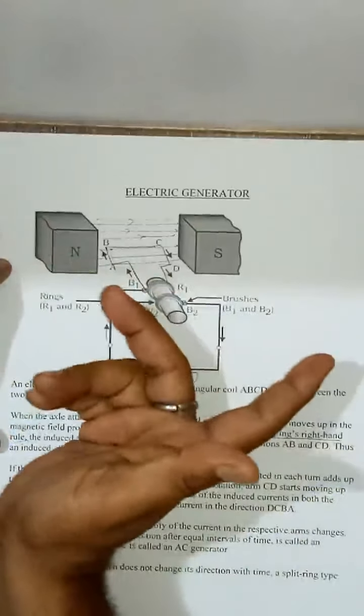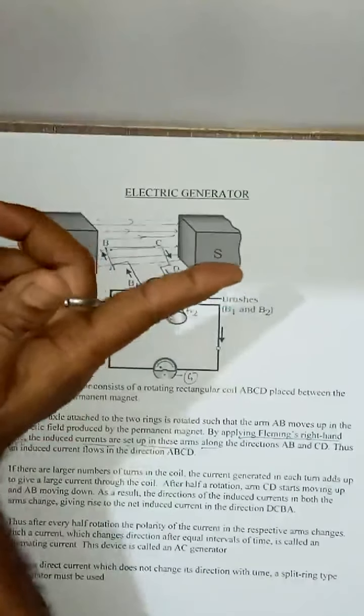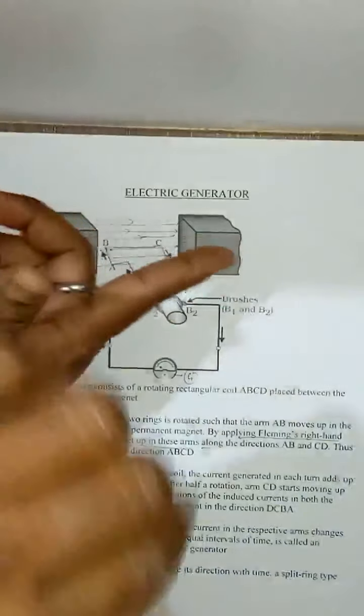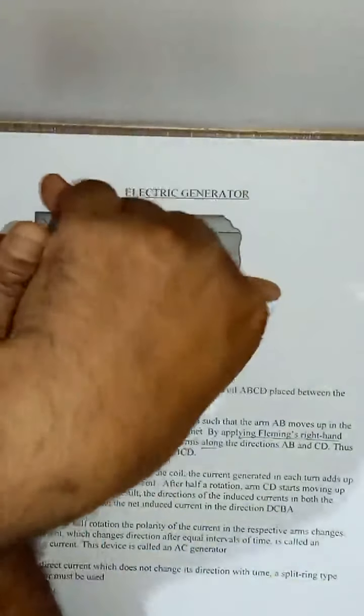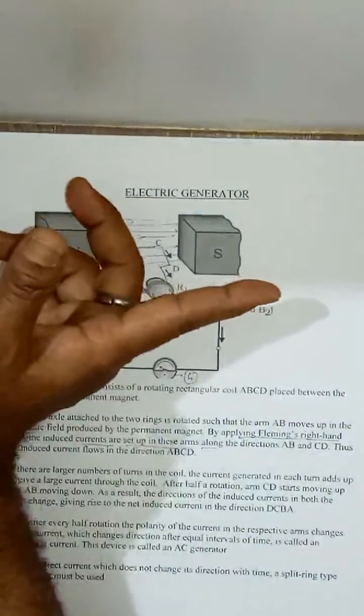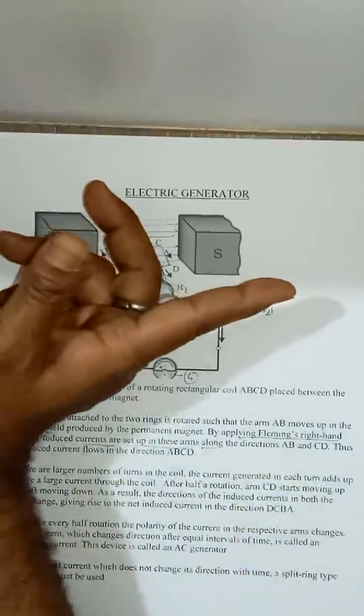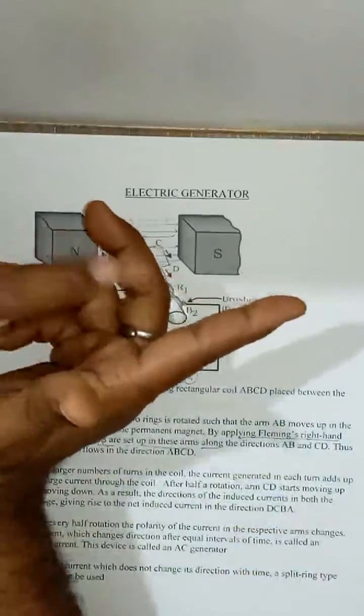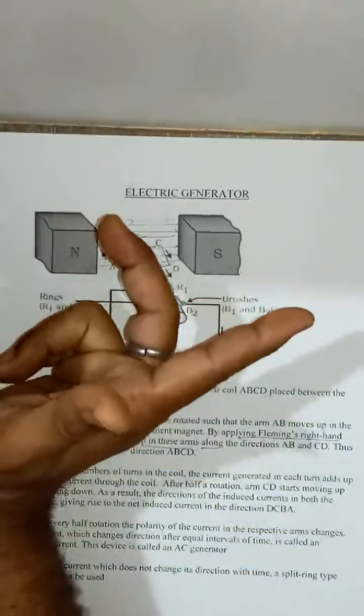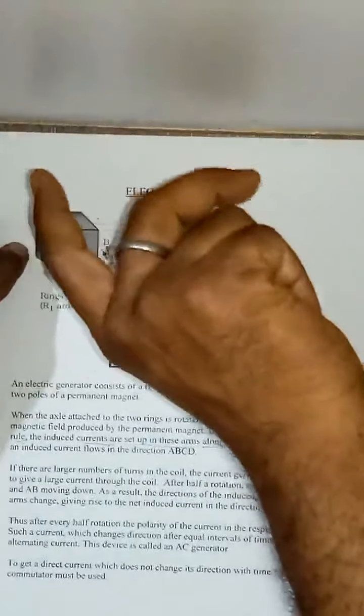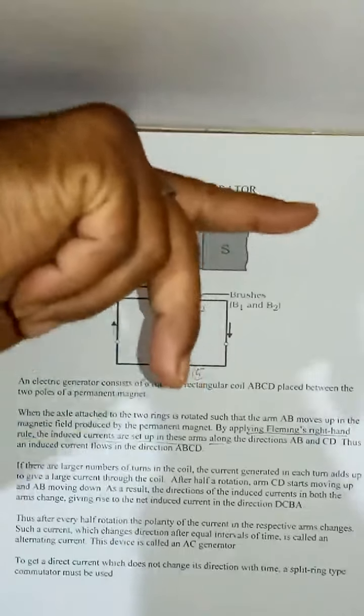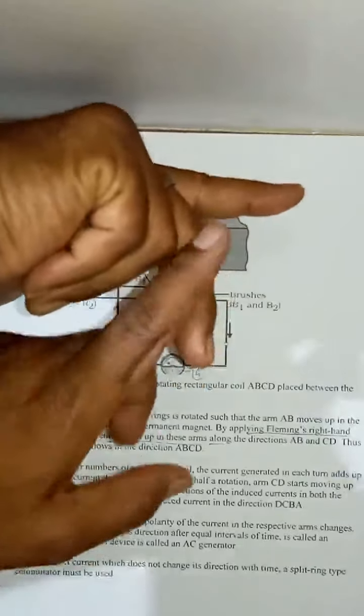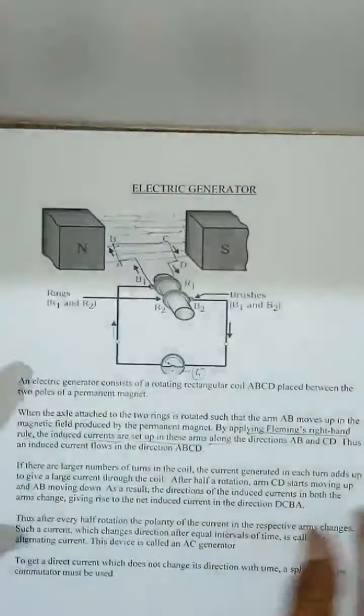Now here applying right-hand rule, we are applying mechanical force here. So field is in this way, and force is in this way, so current will be in this way. Similarly, if force will be downward, current will be in this way. This is the direction of induced current.